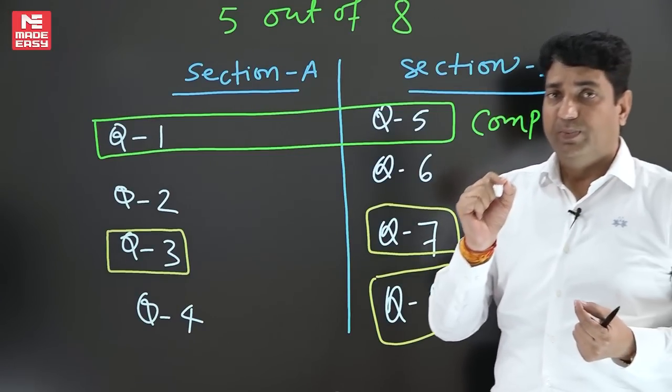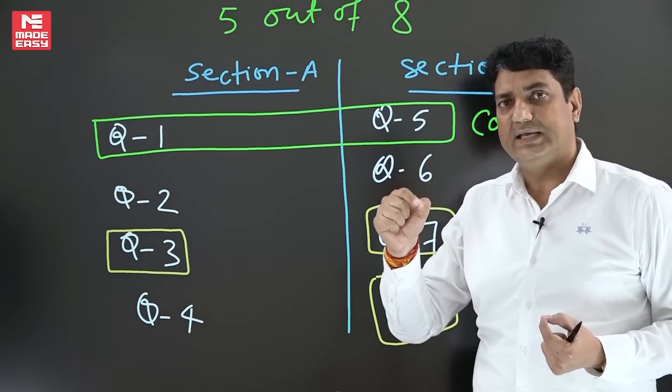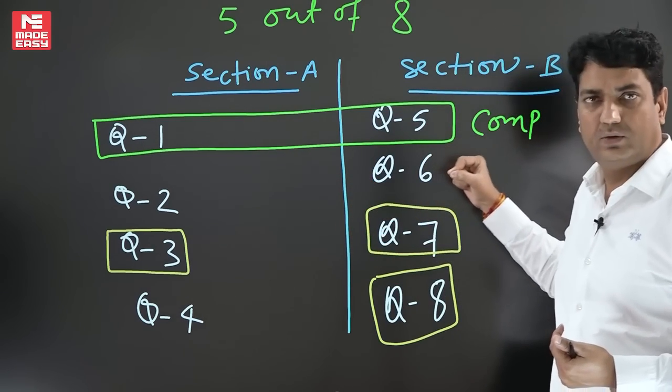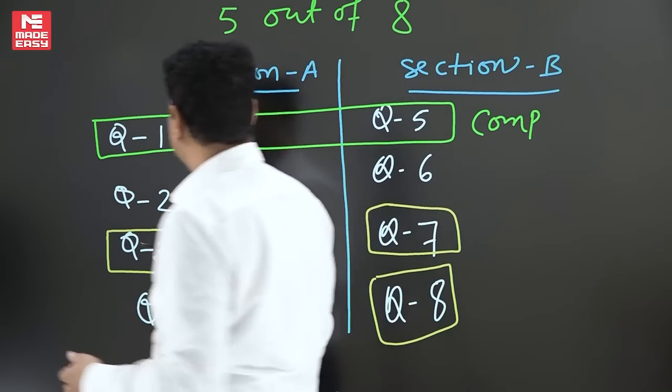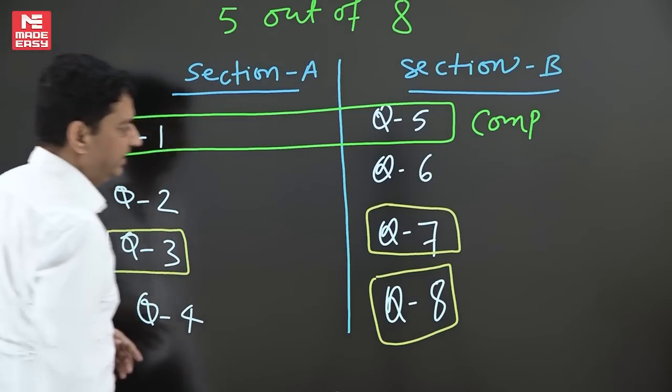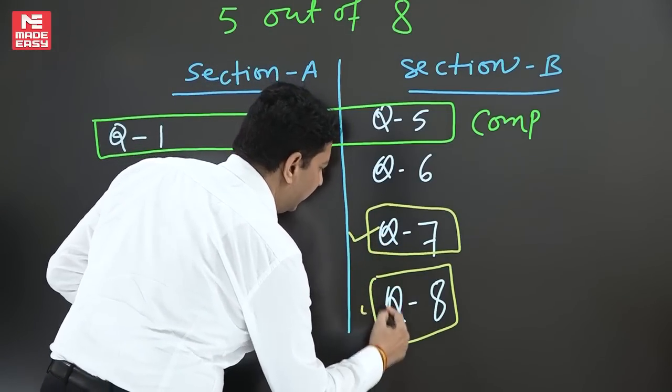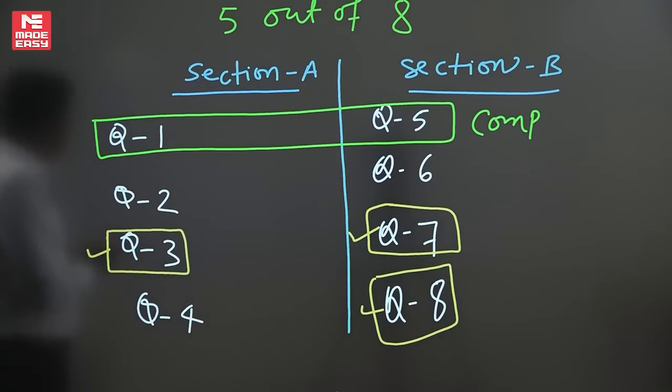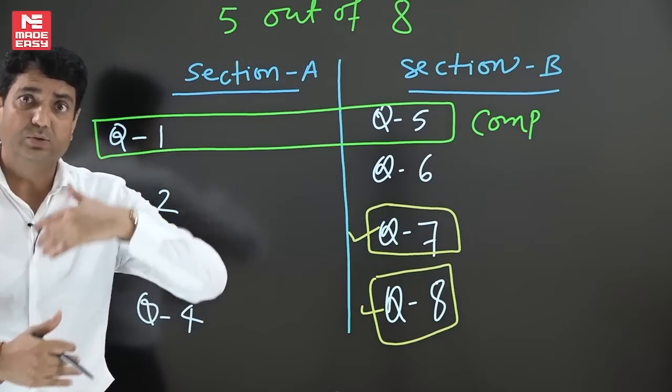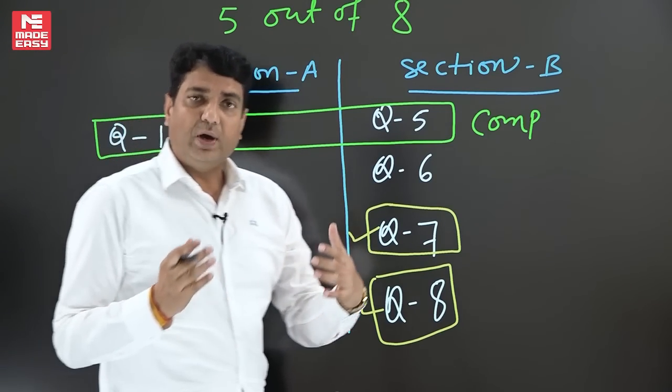So this is the first task which is important. Before you start answer writing, you have to decide which questions you want to attempt. You have decided question number one and five are compulsory, then you have selected three, seven, and eight. These are the questions which you have selected.